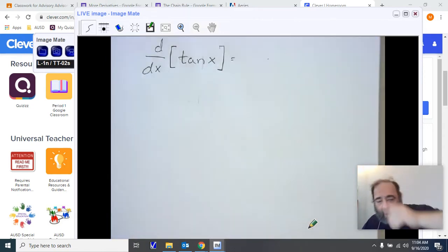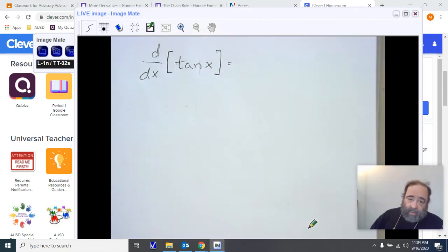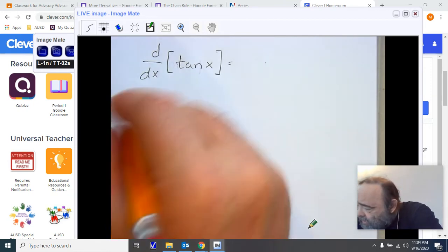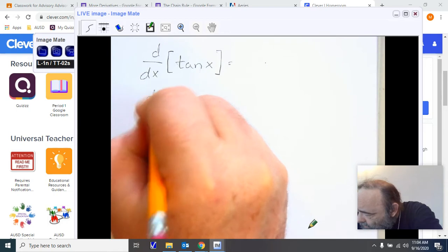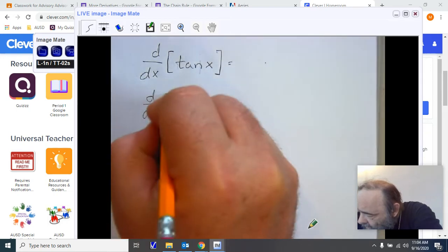So we're going to start off by just looking at the derivative d/dx of the tangent of x. Now, in order to do this, we're going to have to use our ratio for the tangent. So we're going to do a direct substitution with what it equals.